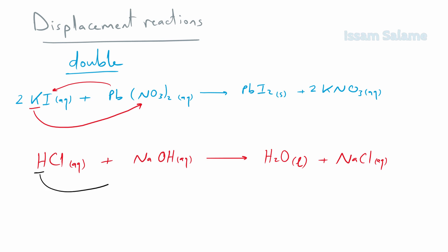As we can see from its name, in double displacement, potassium displaced lead and lead displaced potassium. Another example: the reaction of hydrochloric acid with sodium hydroxide to produce water and sodium chloride. The hydrogen from hydrochloric acid took the hydroxide ion from sodium hydroxide and formed water, while sodium took the chlorine from hydrochloric acid and formed sodium chloride. I will keep a link in the description showing you how to write ionic formulas — it's very important to check that.